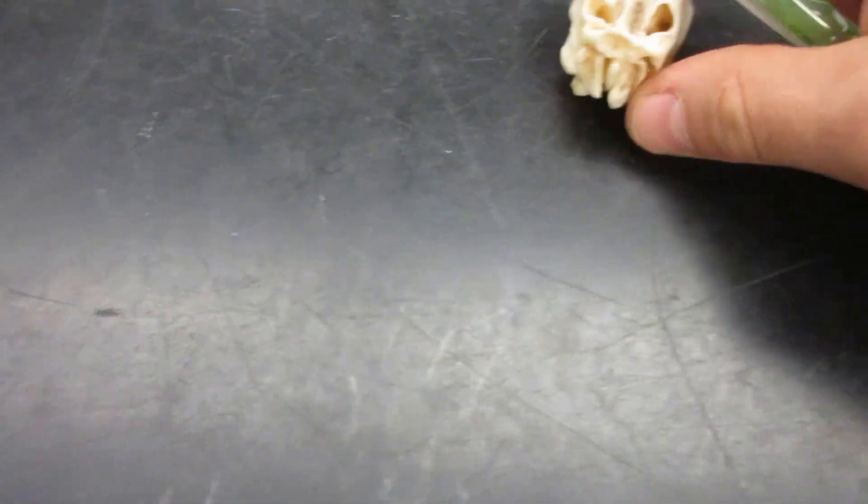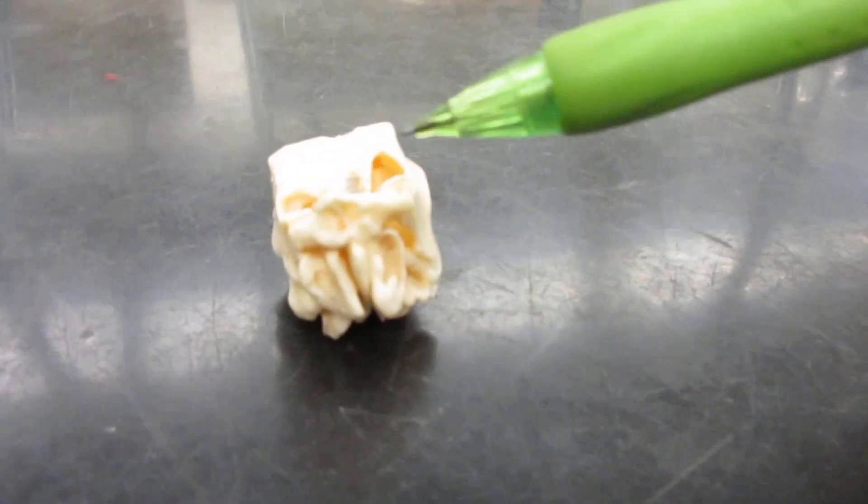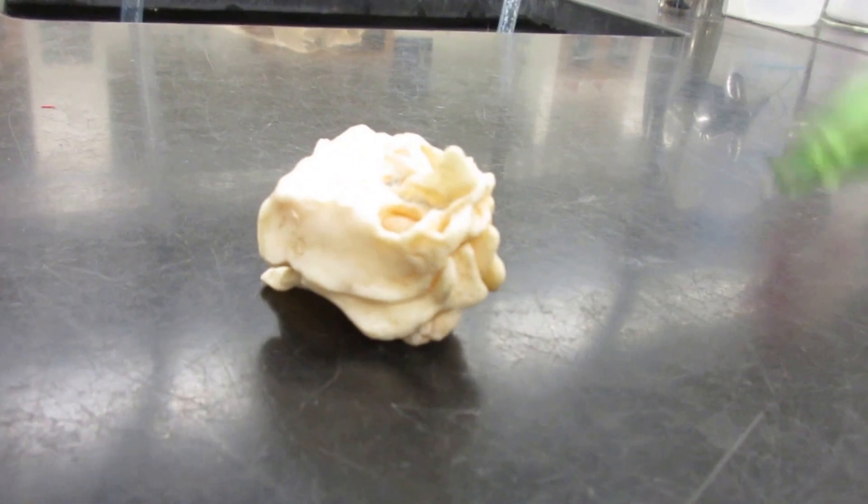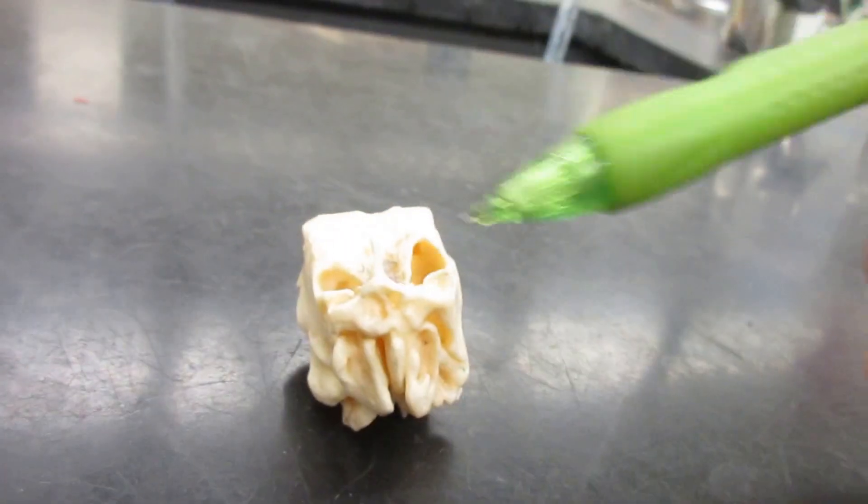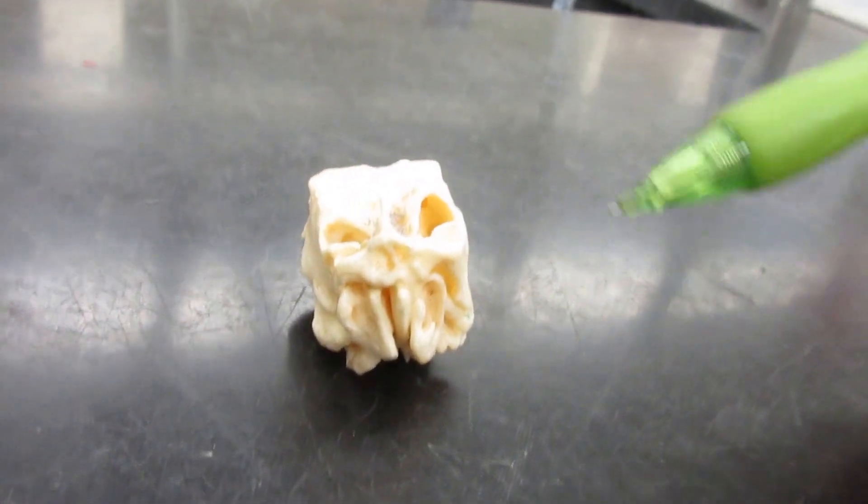Some of the major parts of the ethmoid bone: first, this thing sticking up is called the crista gala, and it's rising from a flat surface called the cribriform plate.